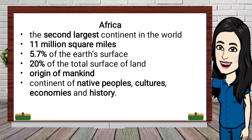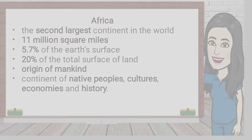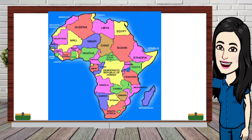Africa is considered to be the second largest continent in the world, with a total area of around 11 million square miles, accounting for 5.7% of the Earth's surface and 20% of the total land surface on our planet. It is considered by many scientists to be the origin of mankind — a continent of native peoples, cultures, economies, and history, with rich geography and interesting history, making it a continent of great biodiversity. There are 54 countries in Africa, as well as quite a few disputed territories. Algeria is now the largest African country by geographical area.